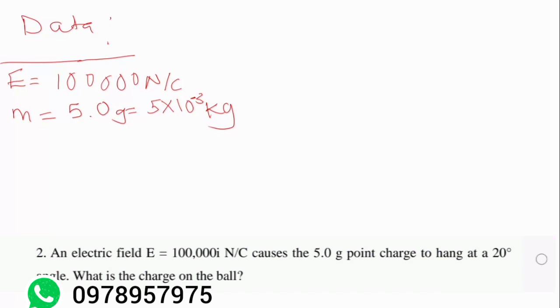What else do we have? We have theta, which is equal to 20 degrees. So then now we're being told that this charge, this electric field rather, causes a certain charge to hang at 20 degrees. We're going to find out the charge on the ball. On this ball, we are being told that it has a mass of 5 grams.